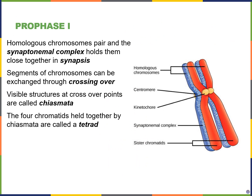In prophase I of meiosis I, there are already many differences compared to mitosis. In prophase I, homologous chromosomes come together very closely and are held together through something called the synaptonemal complex. This tight pairing of homologous chromosomes is known as synapsis. Homologous chromosomes encode or carry the same traits but different versions of those traits.